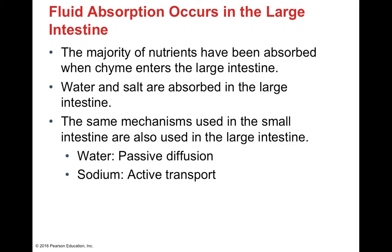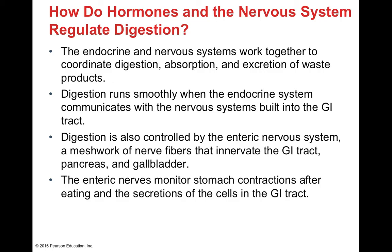In the large intestines, very little nutrition remains — most nutrients have already been absorbed in the small intestines. The large intestine's job is to turn chyme into stool by absorbing large amounts of water and salt, using passive diffusion and active transport. Digestion is coordinated by the endocrine system and the nervous system working together to regulate digestion, absorption, and excretion of waste products.